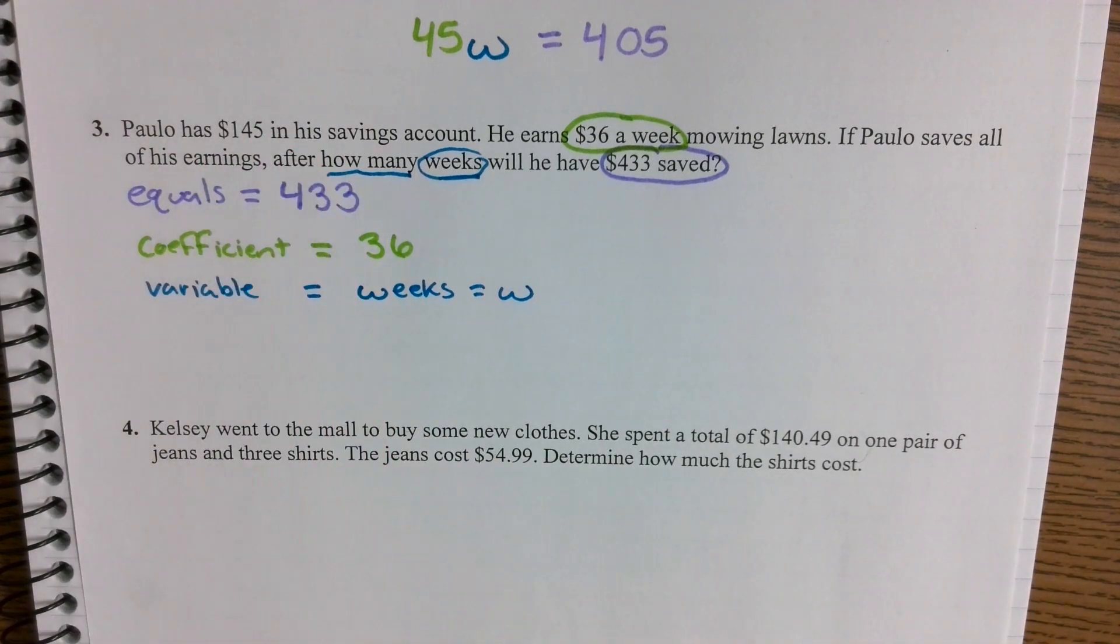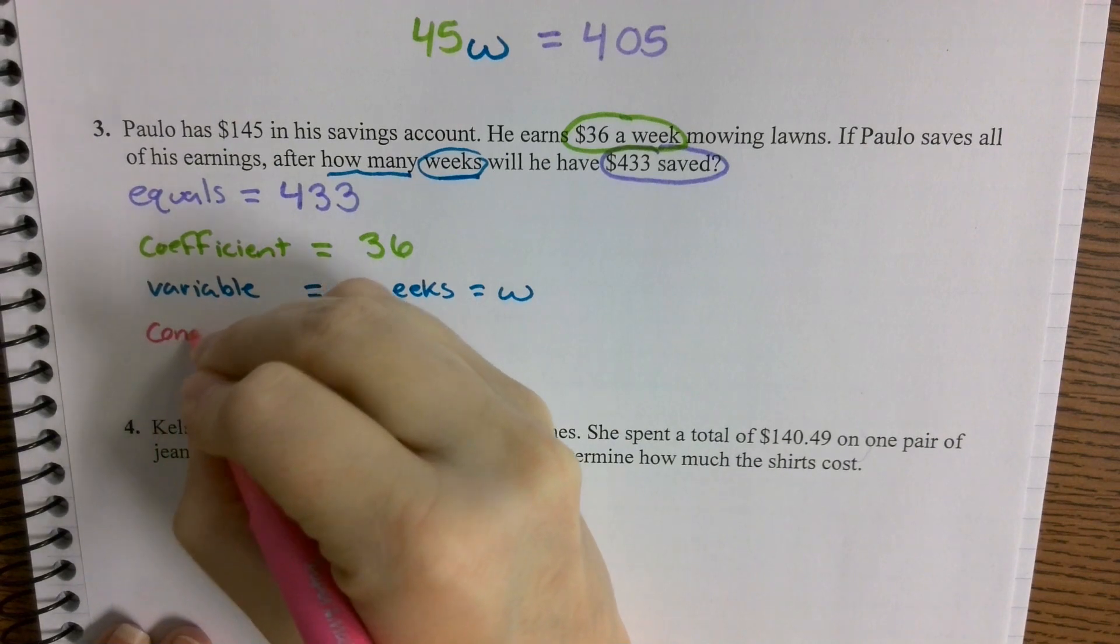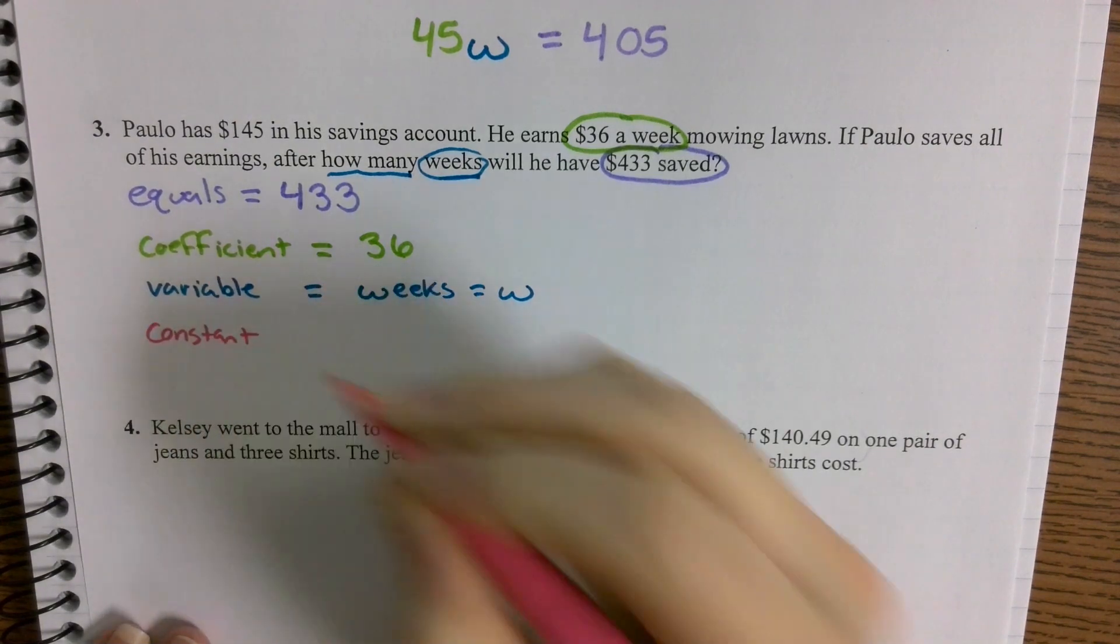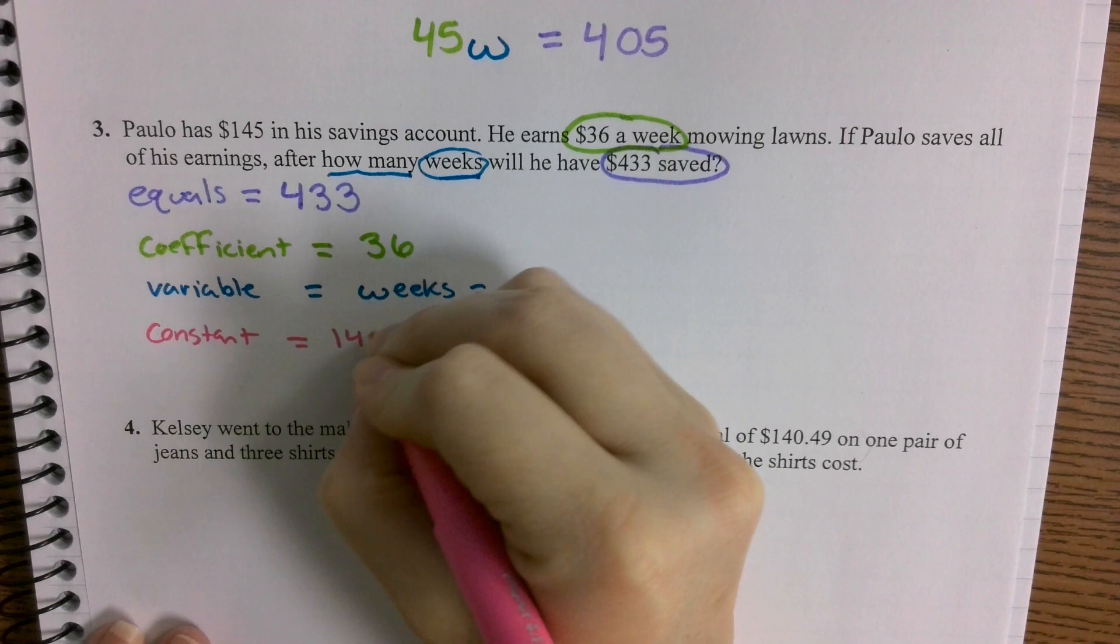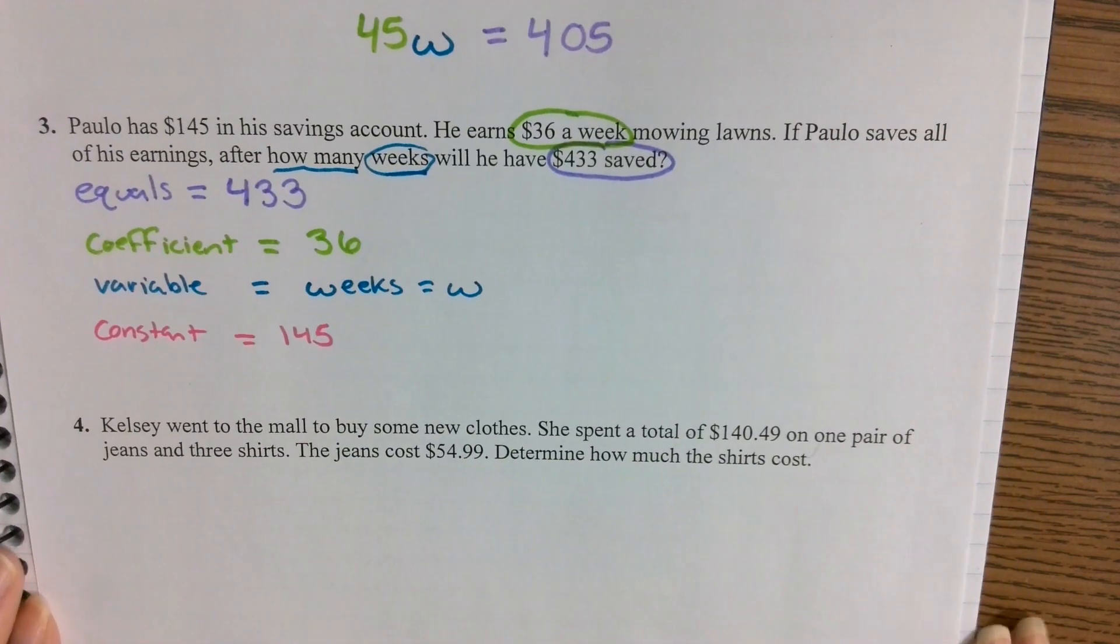Okay, and then $145. That's in his savings account. That's what he's starting with, right? That's already what he has. So that's going to be our constant. This is a one-time value that he already has, that $145.